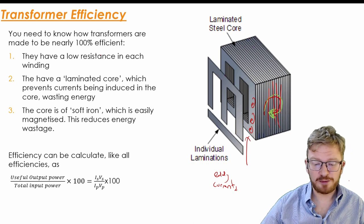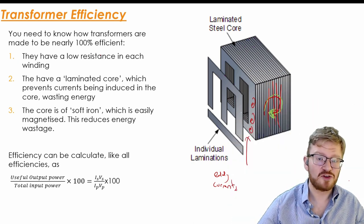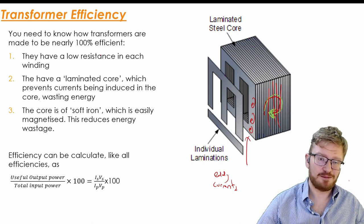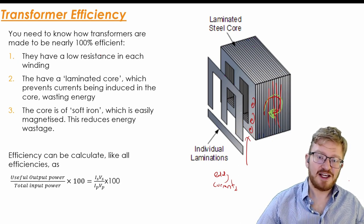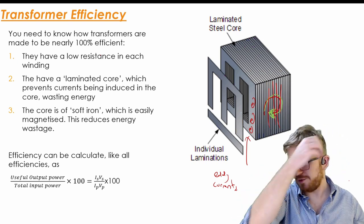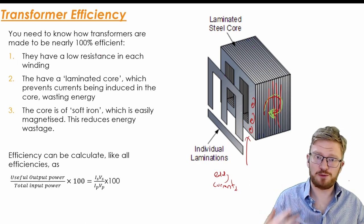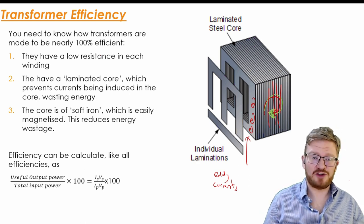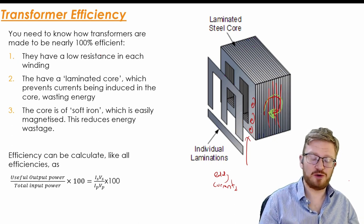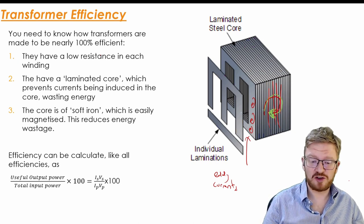And the last one is the core needs to be made of soft iron. So these individual laminations, the iron that you use, has to be soft iron. Soft iron means iron that can be easily magnetised and demagnetised. If you have to put in energy forcing it to become a magnet and forcing it to stop being a magnet, again efficiency just means that you won't get all the energy in out again. So the softer iron you have, the more easily it sets up and loses its magnetic fields, the more efficient this is going to be.